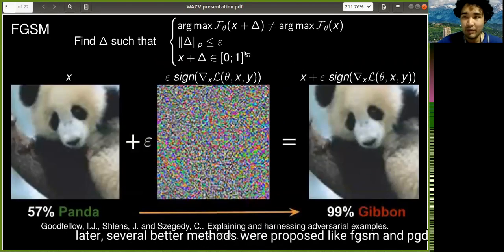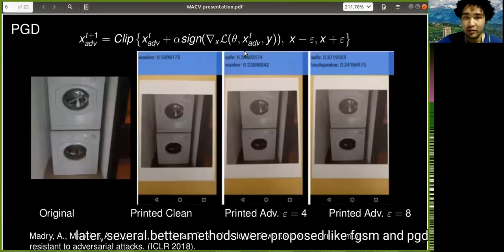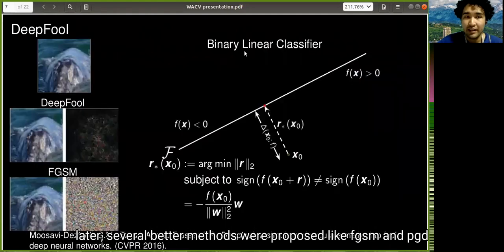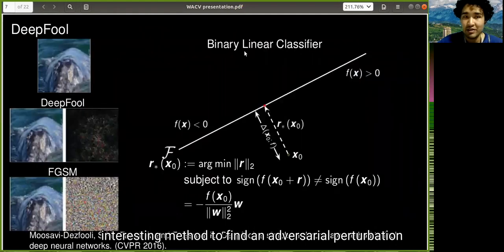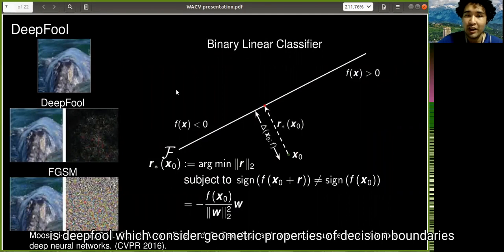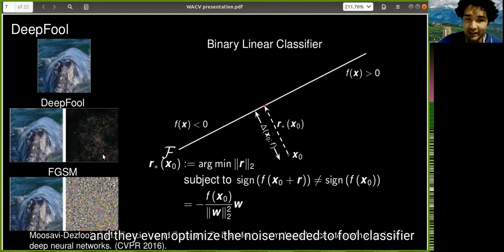Later, several better methods were proposed like FGSM and PGD, and interesting methods to find adversarial perturbations like DeepFool, which considers geometric properties of decision boundaries and even optimizes the noise needed to fool a classifier.